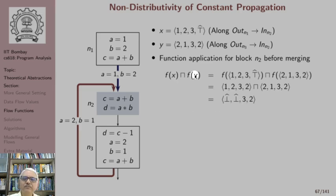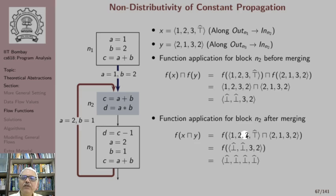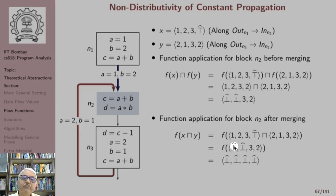This is the result of F(X) meet F(Y). Now, what happens if we merge the dataflow values first and then apply the flow function? We first take X meet Y: (1, 2, 3, top) meet (2, 1, 3, 2) gives (bottom, bottom, 3, 2). When we apply the flow function to this, the value of D = A * B, but A and B are not constants — so D is also bottom. Similarly, C = A + B, but A and B are both bottom, so C also turns out to be bottom. It is easy to see that F(X meet Y) is strictly weaker than F(X) meet F(Y), indicating that the flow function of constant propagation can be non-distributive.